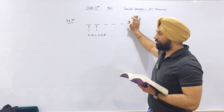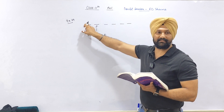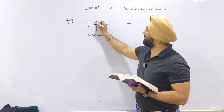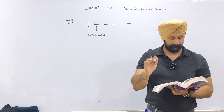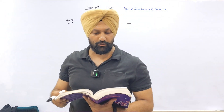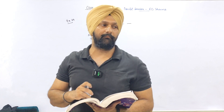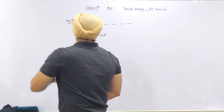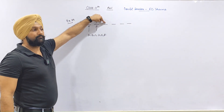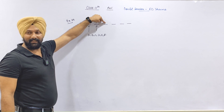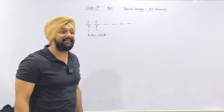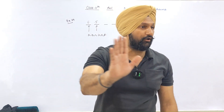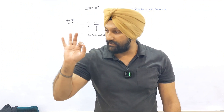How many ways can this first place be filled? Six ways. How many ways can this second place be filled? Five. The digits are also not repeated in a serial number. Now, how many ways can the first digit place be filled? 10 ways. Remember, serial numbers and passwords can start from 000.